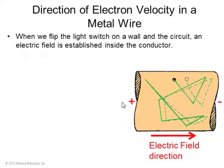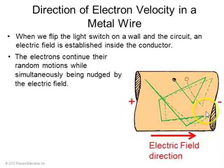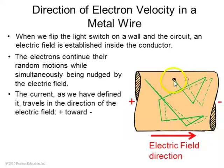The direction of electron velocity in a metal wire: when you flip on a switch, it establishes an electric field inside the metal wire. Ordinarily, electrons are moving randomly and bumping against atoms and other electrons. But once you set up an electric field, each electron as it's moving is always being nudged away from minus and towards plus. That drift motion of all these electrons is what we call the current.